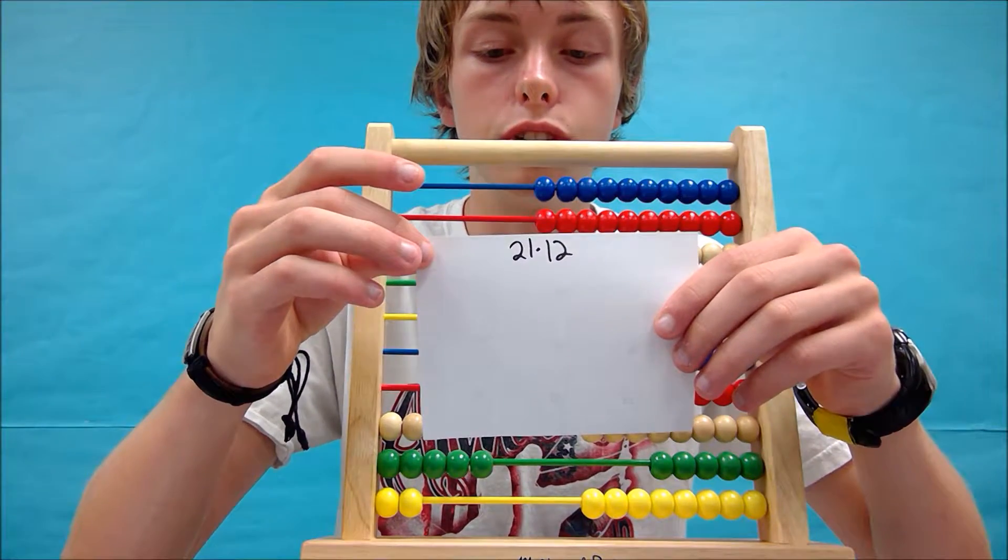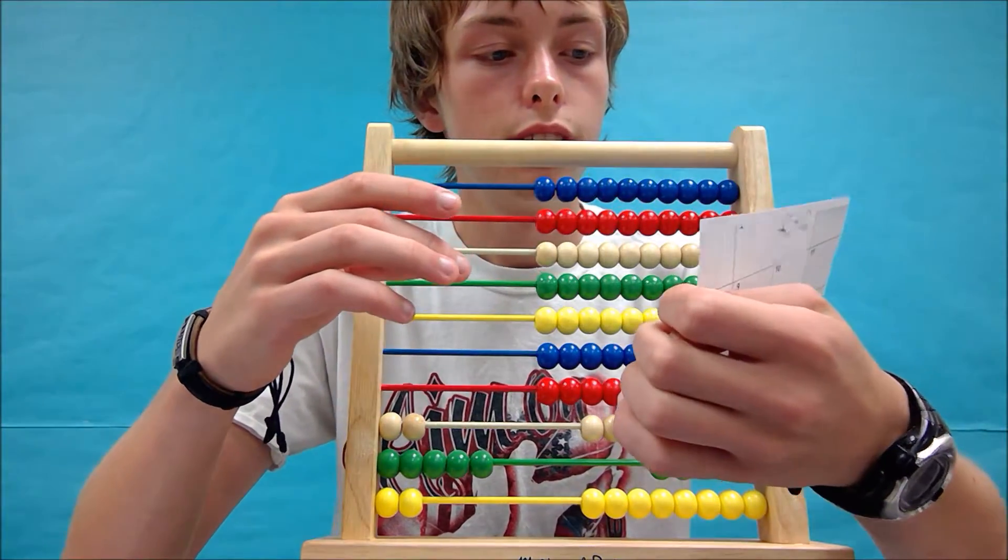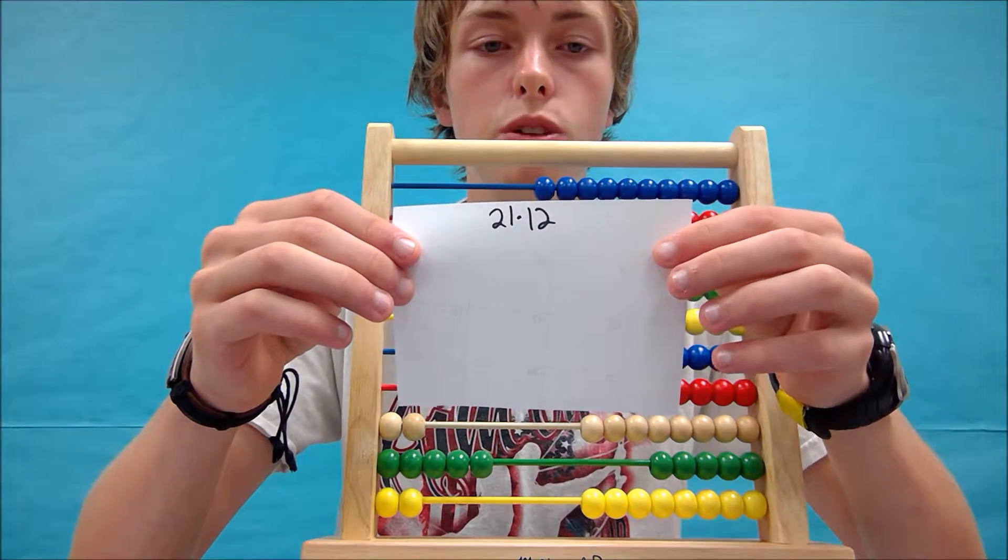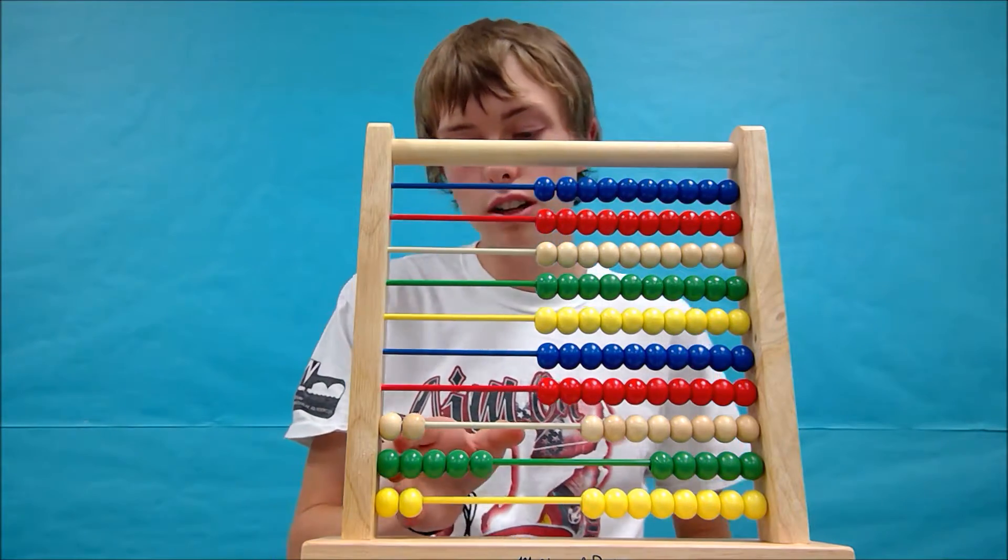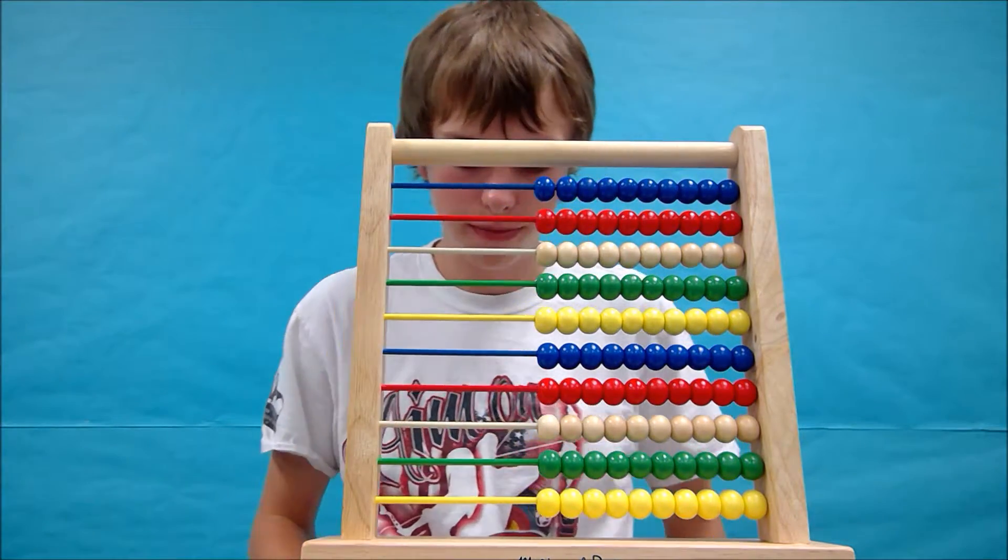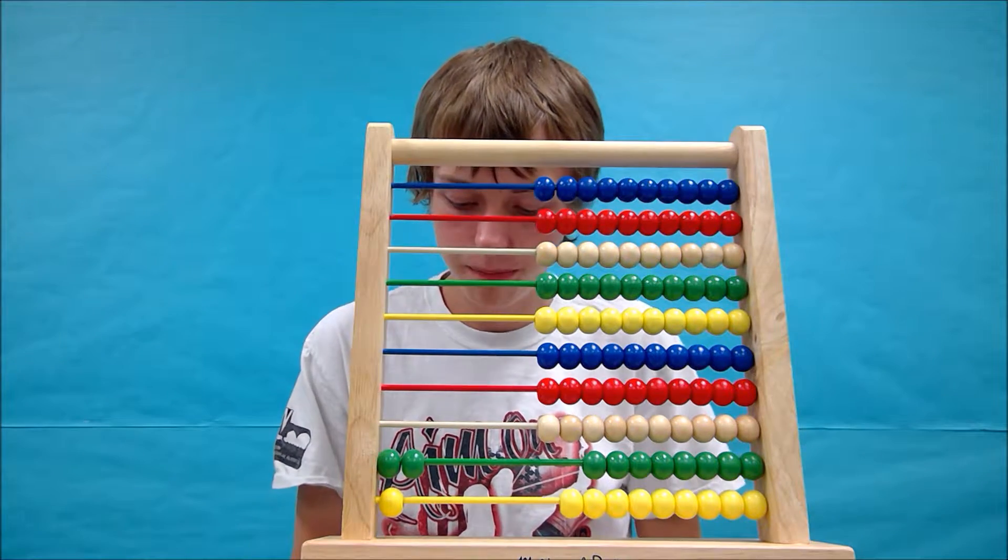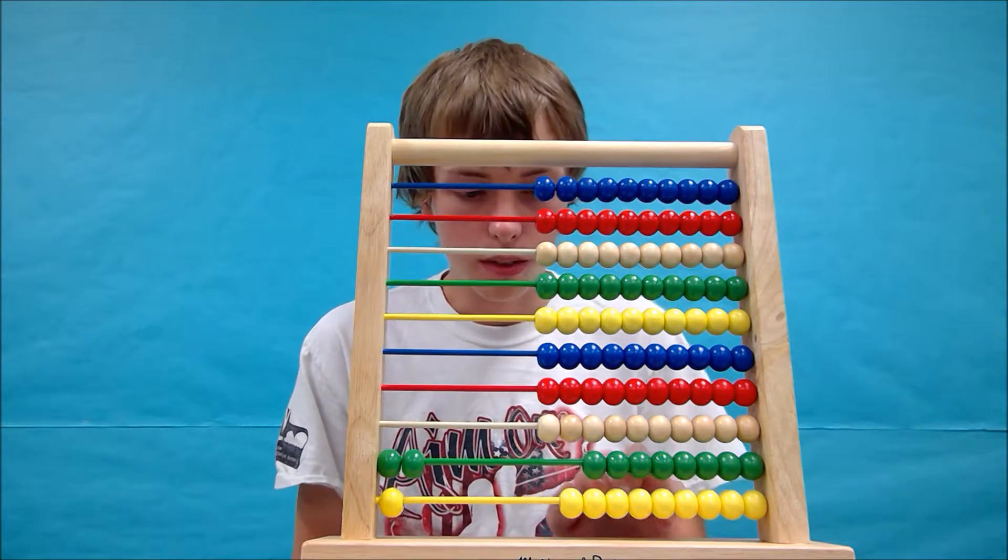Now I'm going to write 21 times 12 on the top of this sheet of paper again, and on this side I'm going to tally up. I'm going to use this side as my notes and this side is going to be my tally for how many groups of 21 I have. All right, so let's get started by clearing our abacus, and we're going to make one group, that's one group of 21, and we make...